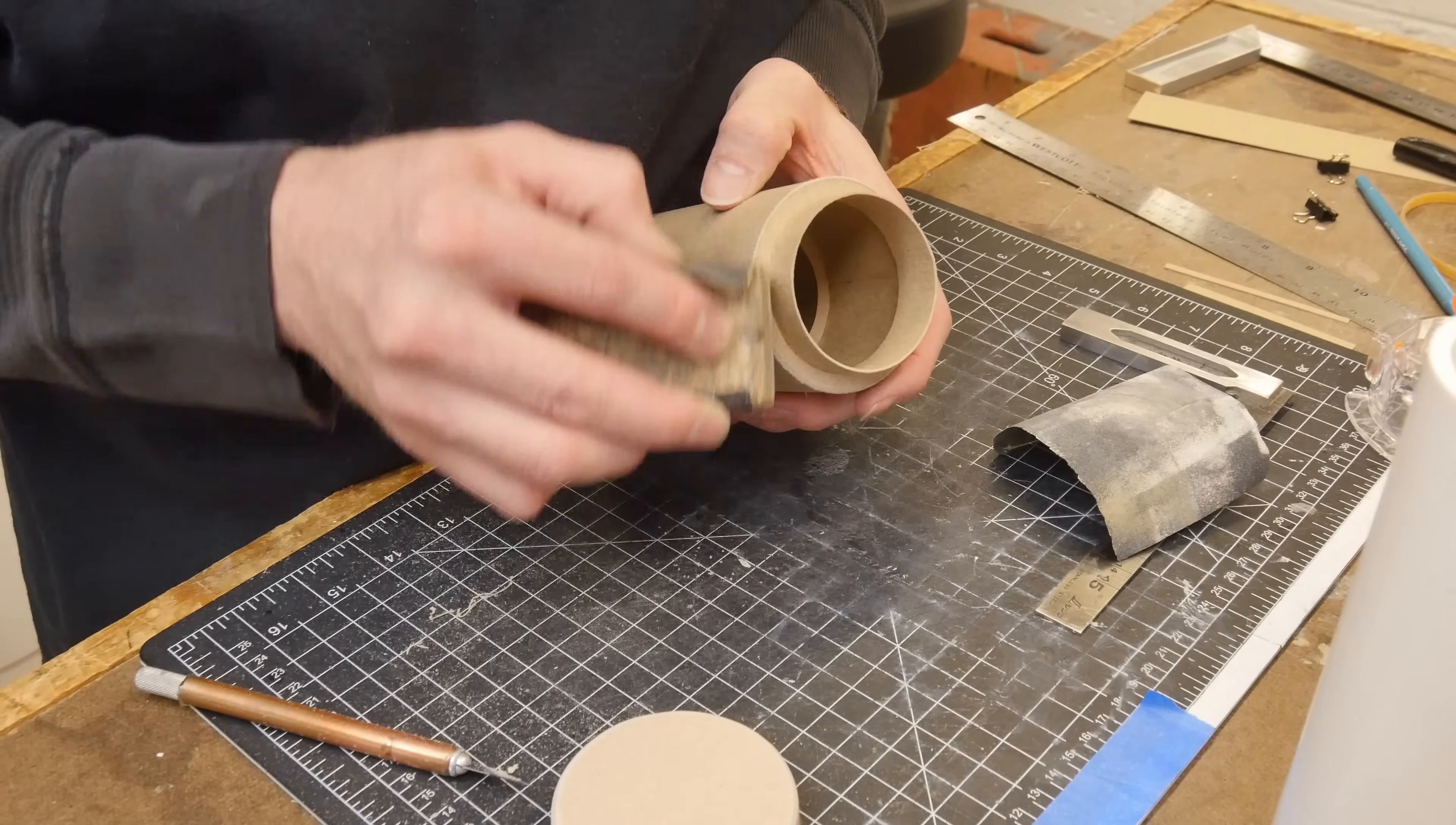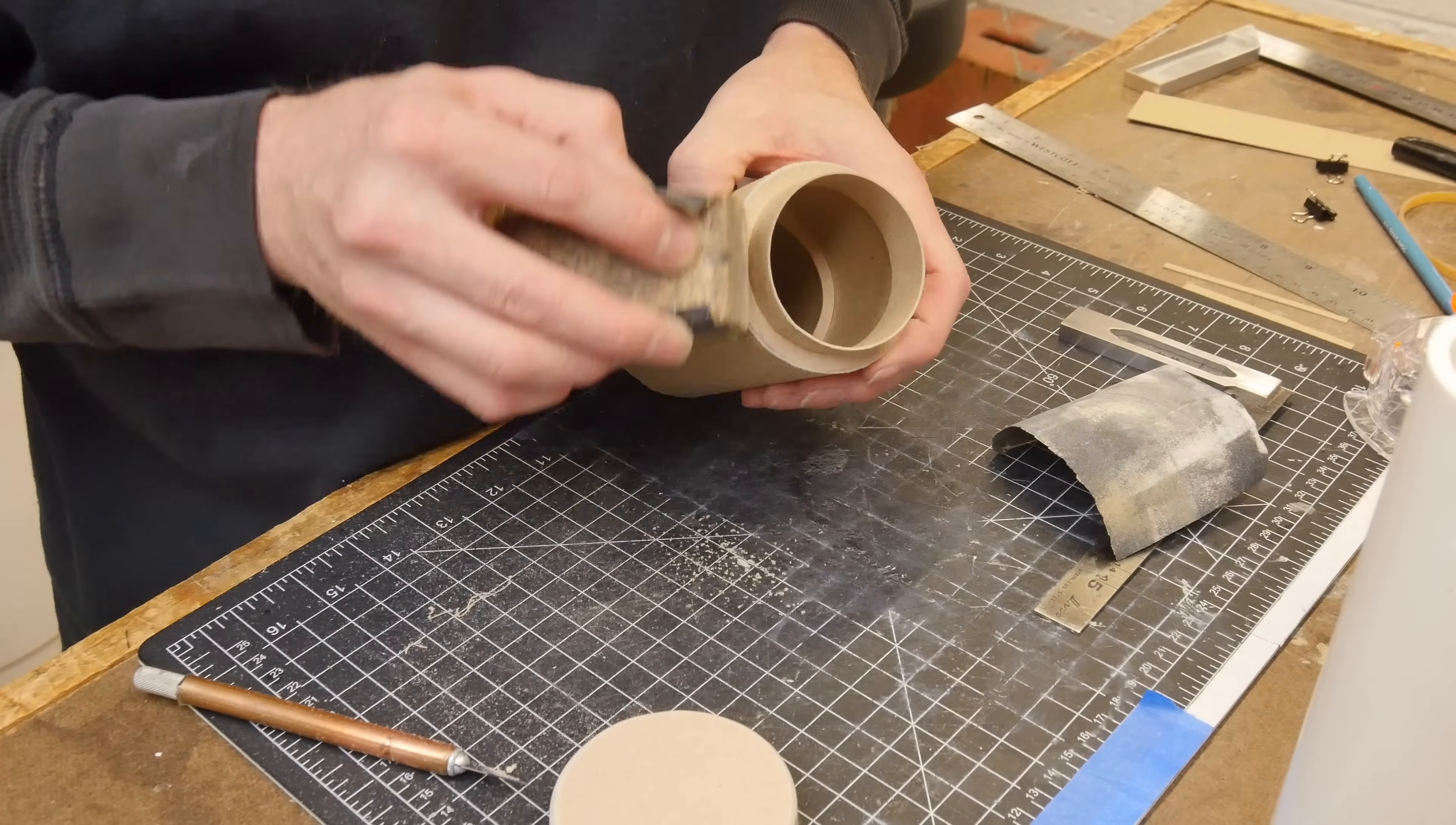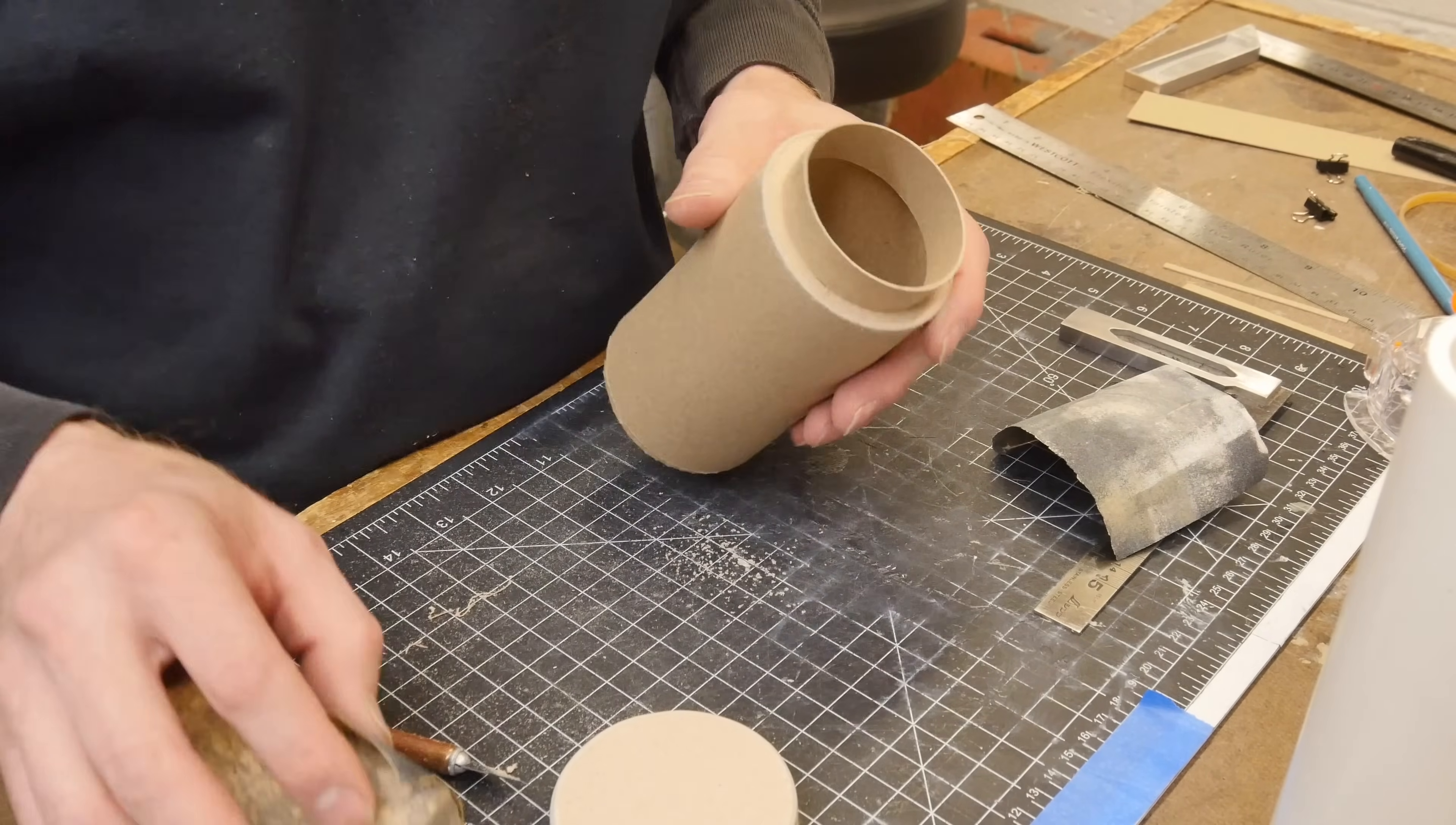The last way to create a radius is by simply sanding one of the edges. Probably using about a 320 grit here, maybe 400 is what I'm going to end up with. I just sand all the way around the container and get a nice little radius on there. That's going to be the tightest radius of all three of them.